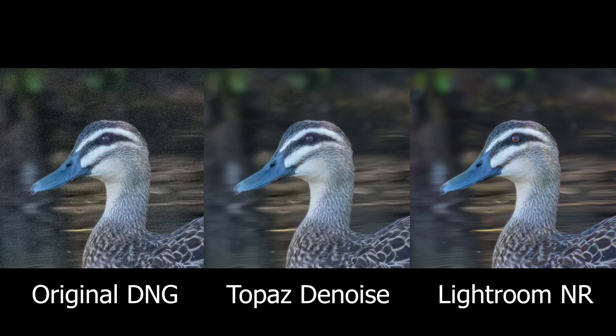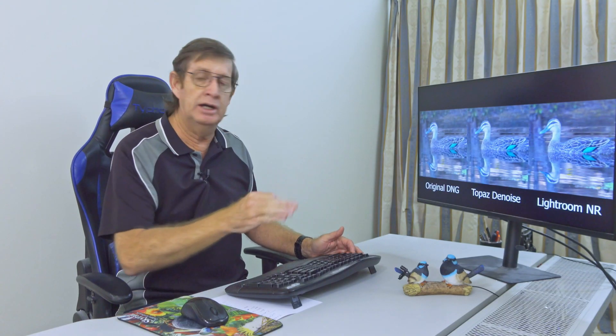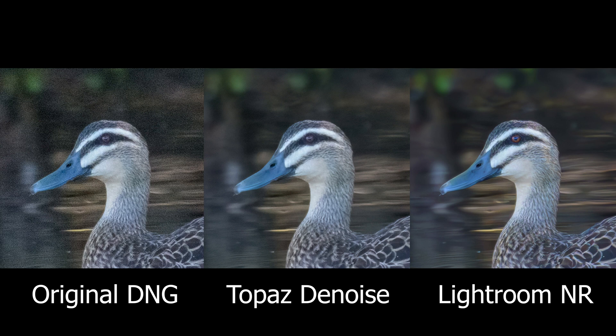The same desaturation applies to the ISO 4000 image — the green is very nice in the original and Topaz, but Lightroom Denoise is much flatter. With the Milky Way photos it's less pronounced, but the Lightroom Denoise is still less saturated. In the last duck image I found something peculiar: the eye in the Lightroom Denoise version really pops and looks natural, while the other two show some reflections.